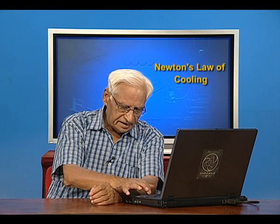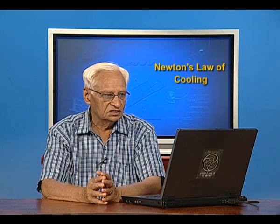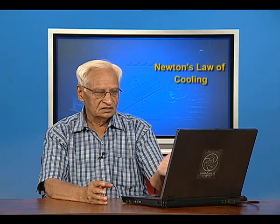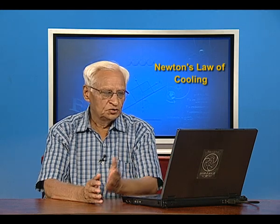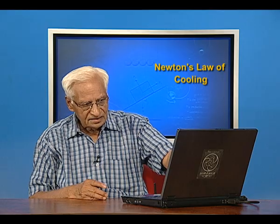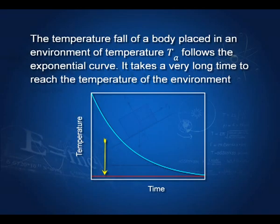If you want, you can get a helper to record observations. Take some water in a pan and heat it till its temperature rises to about 80 degrees Celsius. Then let it cool while stirring gently and measure its temperature at intervals of 1 minute to begin with, and then every 2 minutes. To find out if there is any relation between the rate of cooling and time, you plot a graph between temperature and time. This is an exponential curve. This red line shows the ambient temperature — the temperature of the surroundings — and you can see that ambient temperature is reached only after a very, very long time.